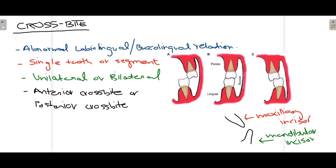A different variation of crossbite is when the maxillary molar is present completely buccal to the mandibular molar — this is also crossbite. So crossbite simply means an abnormal labiolingual or buccolingual relation is present. Crossbite can either be related to one single tooth or a segment of teeth, and can be unilateral — present on one side — or bilateral, present on both sides.